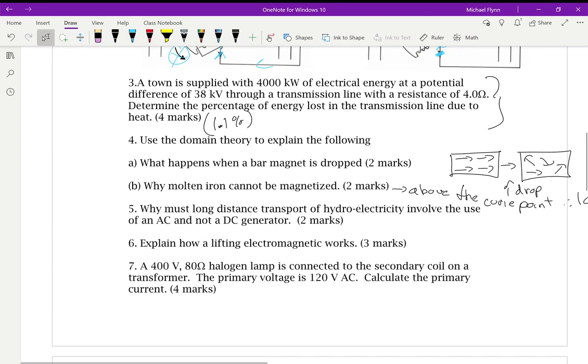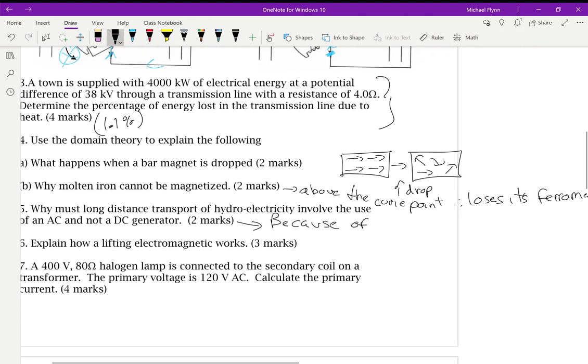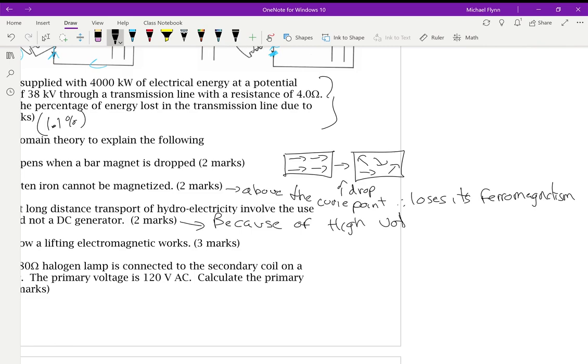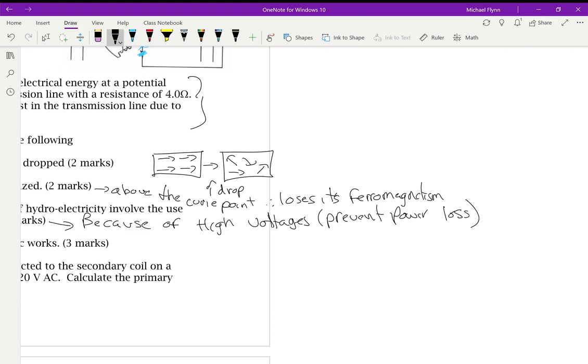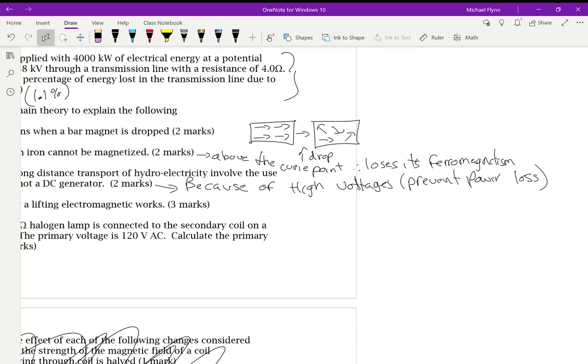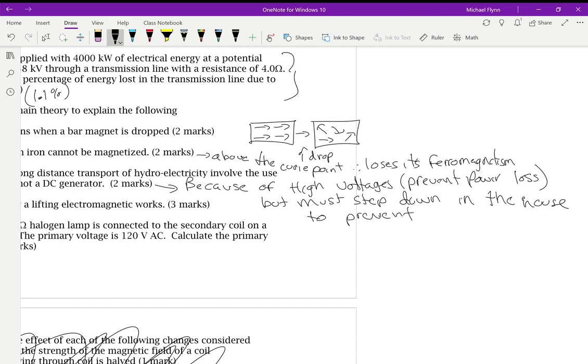Why must long-distance transport involve the use of AC and not DC? I explained this this morning, actually, in this morning's lesson. But, it's because of high voltages, and they prevent power loss, which we talked about this morning in the calculation, calculation like question number three, right there. We use high voltages to prevent power loss, but must step down in the house to prevent arcing. That's where electricity jumps, because of its high voltage. It can jump through a wire, or, you know, if you put your hand near the Van der Graaf on a spark.